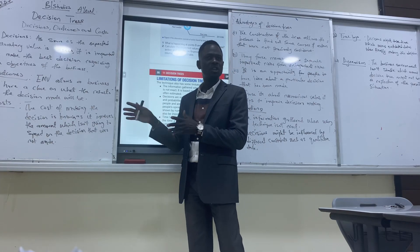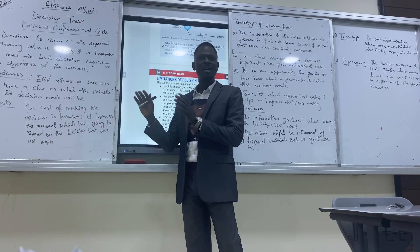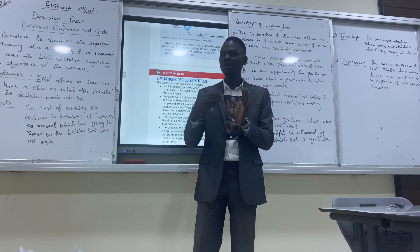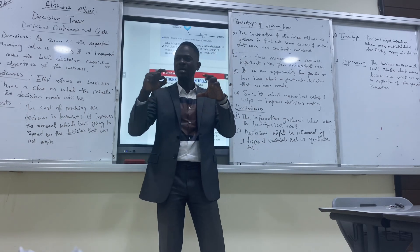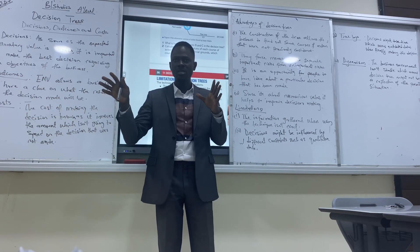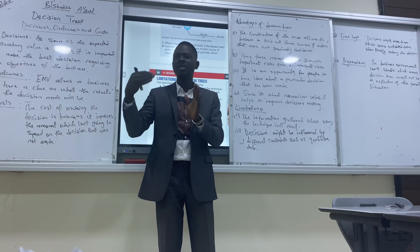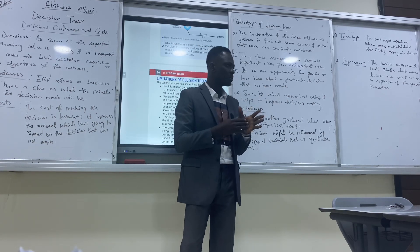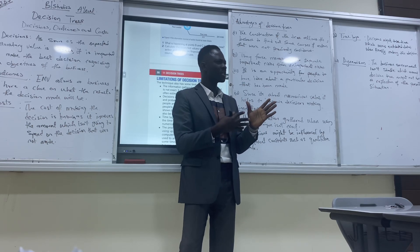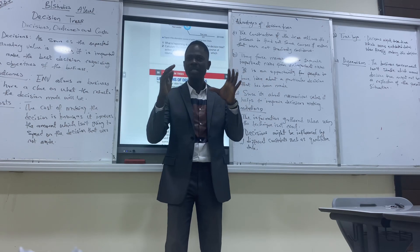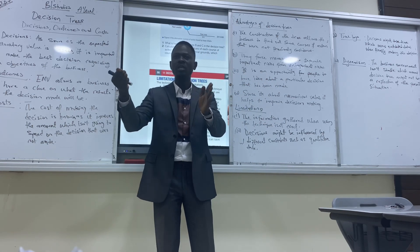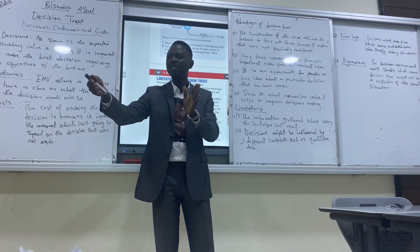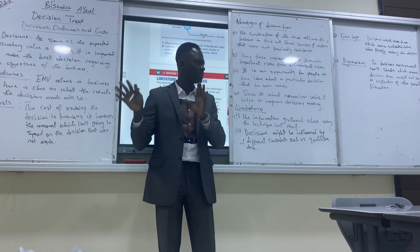We go to decisions, outcomes, and cost. We have to make a decision based on decision tree. As soon as we are able to get our EMV, it is about making the expected monetary value. We talked about it previously. As soon as we have our expected monetary value, the next thing to do is to make the decision — either to continue with the project or to stop the project. That's about decision.